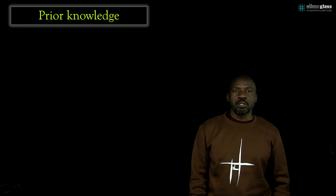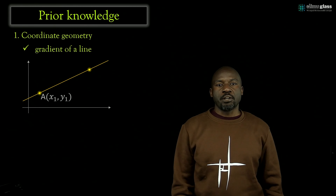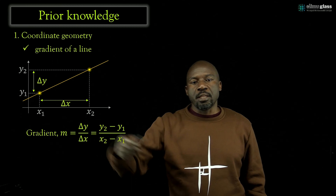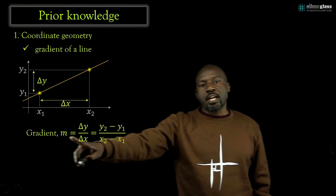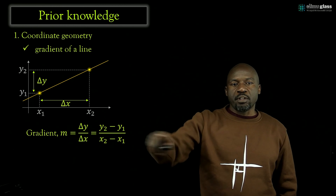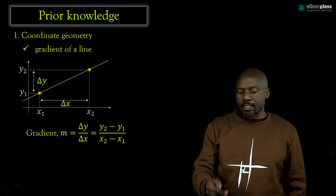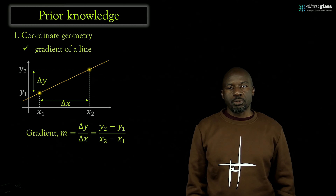The first thing I want us to do is to quickly go through some of the prior knowledge — some of the areas you should know before you embark on this course. The most important is understanding of coordinate geometry, meaning being able to calculate the gradient of a straight line. If you are given a straight line with two known coordinate points, then it should be possible to find the gradient. Suppose we are given a point A with coordinates x1, y1, and a point B with coordinates x2, y2. If we know the change in x and the change in y when we move from point A to point B,